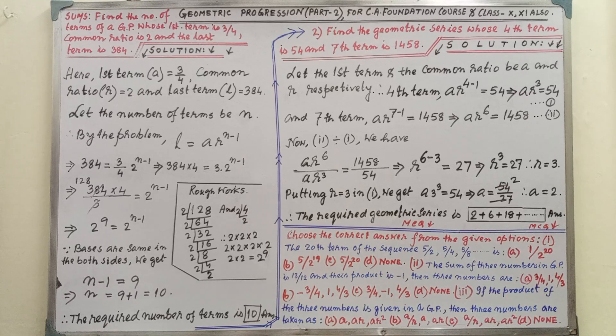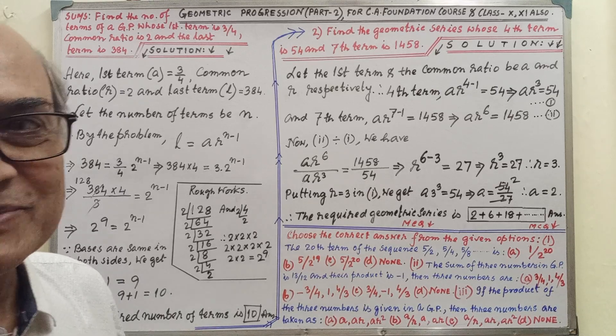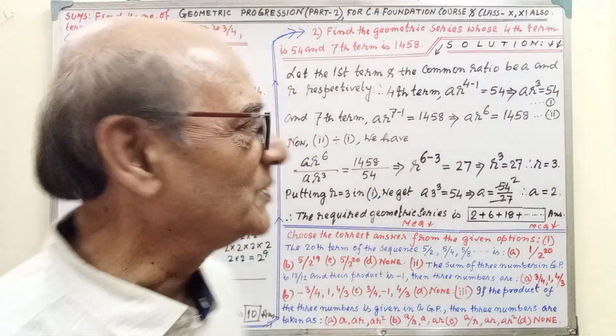Hello children, good morning to all of you. Today for CA Foundation course and class 10-11, Geometric Progression Part 2. That means you have already had one lesson. You must go through that lesson before this video because there are formulas you have to learn and remember. Now please pay your attention on the board.